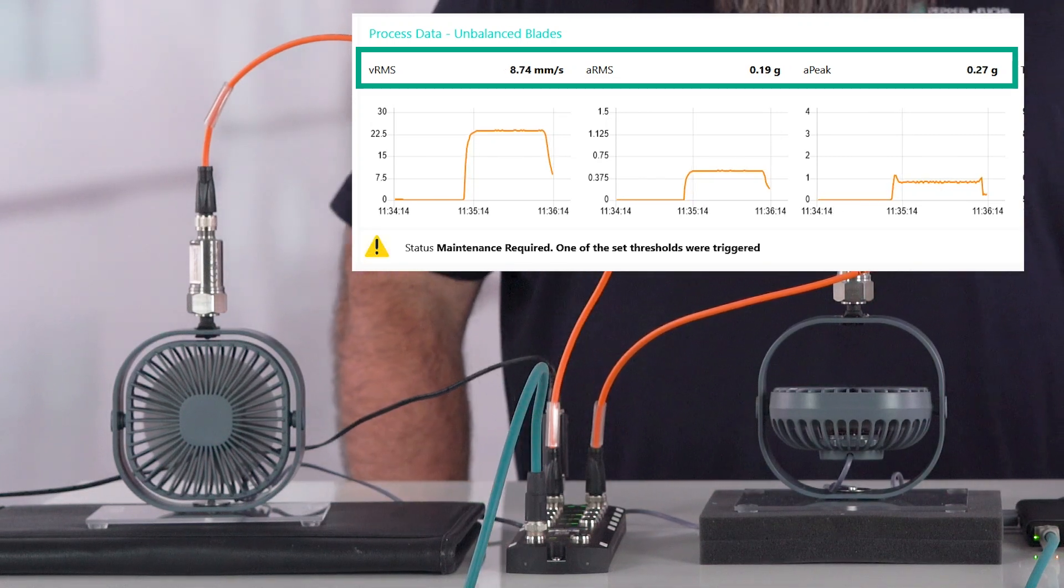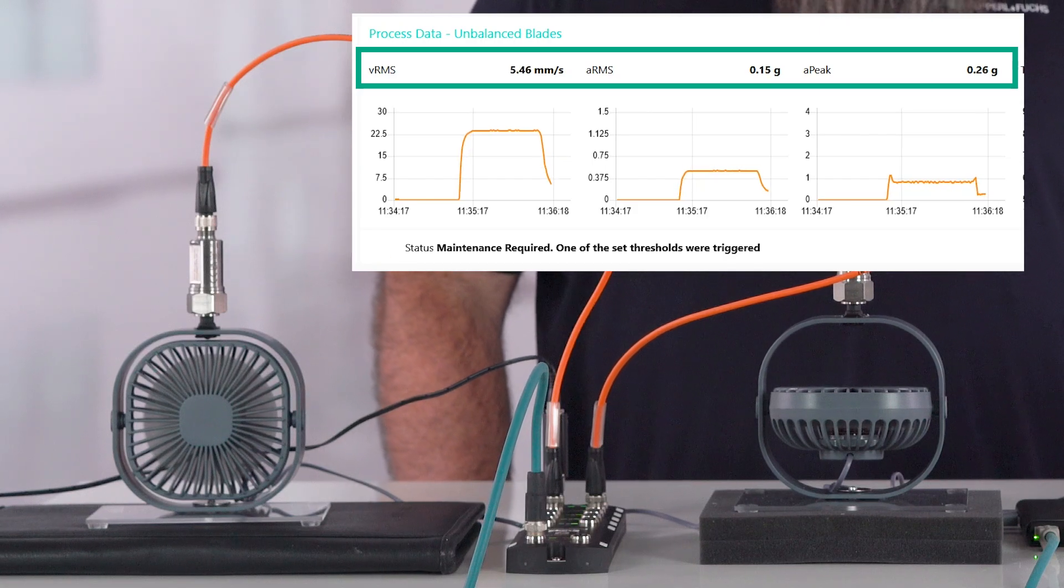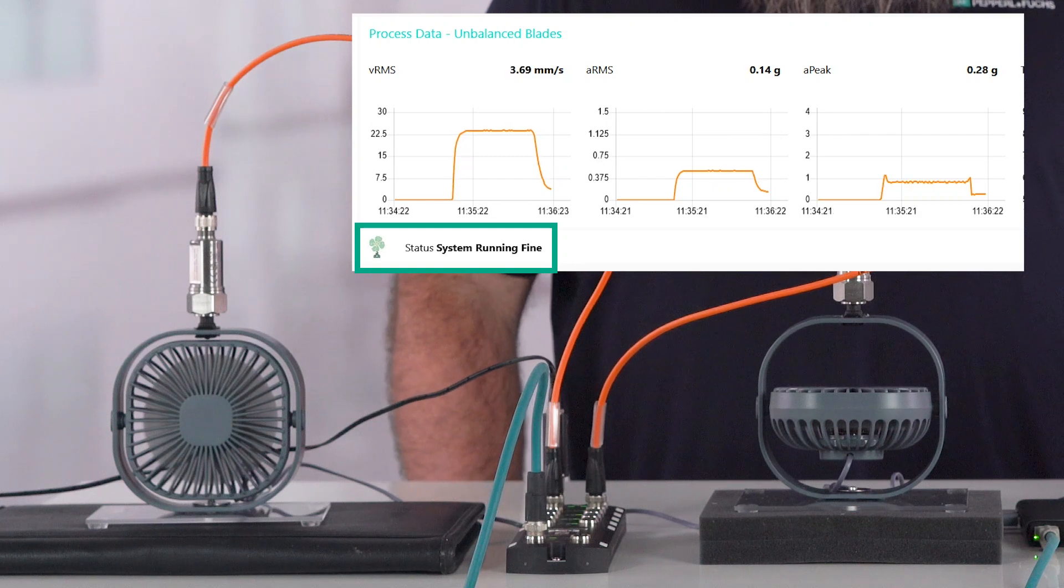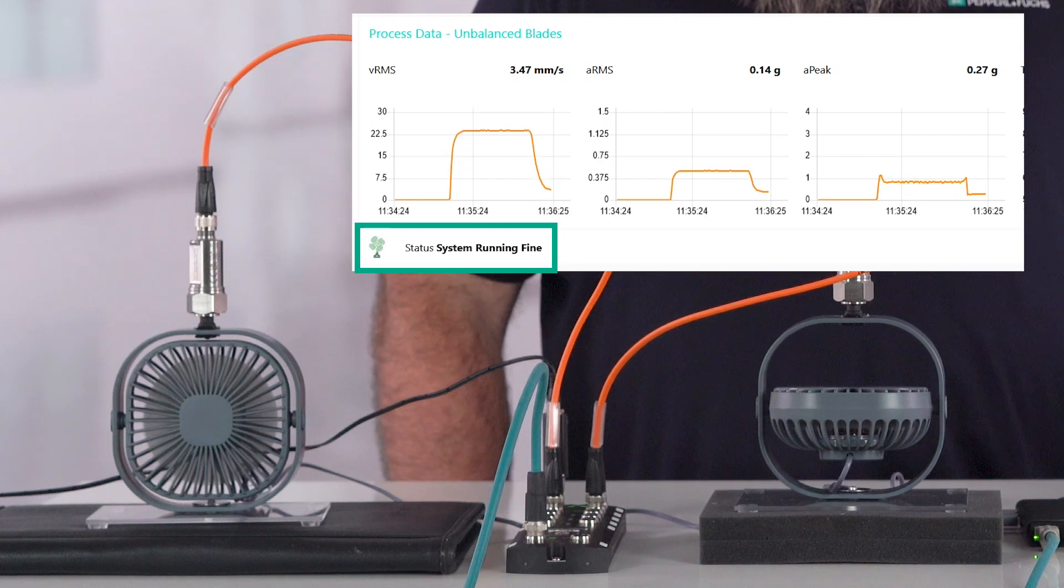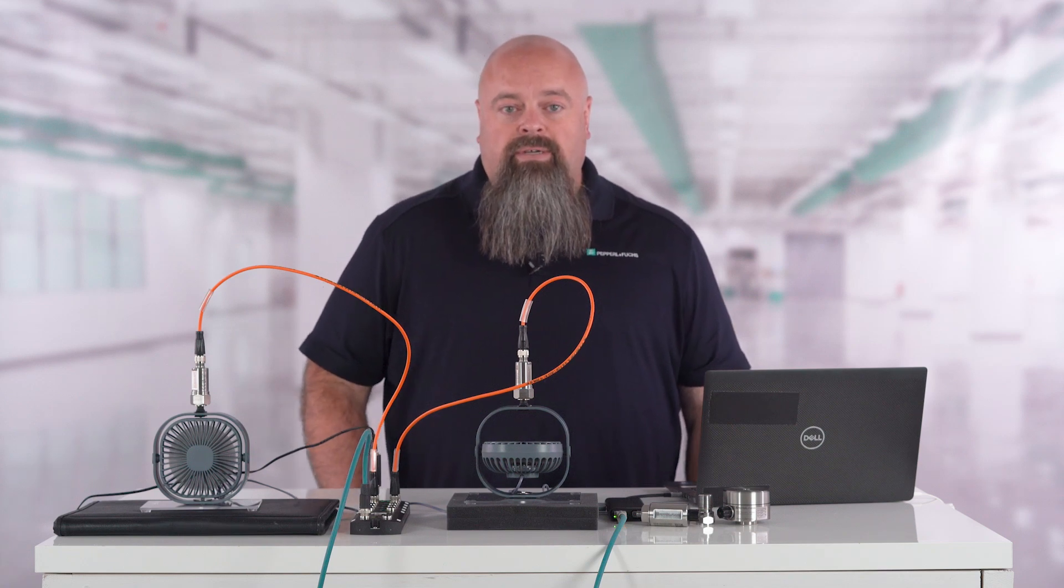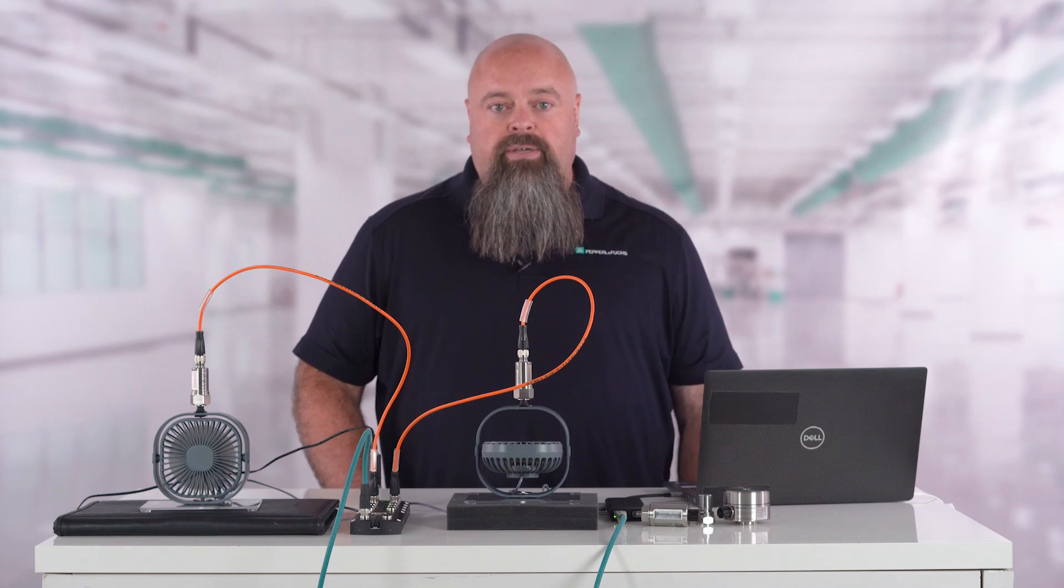You can see the values for Sensor 2 have decreased, even to the point where the fan appears to be running within normal parameters, and the warning icon has returned to the fan icon. This demonstrates the need to mount the sensor in the proper axis. This also shows that a single-axis sensor can isolate the vibration profile of the rotating shaft from the rest of the machine vibrations.